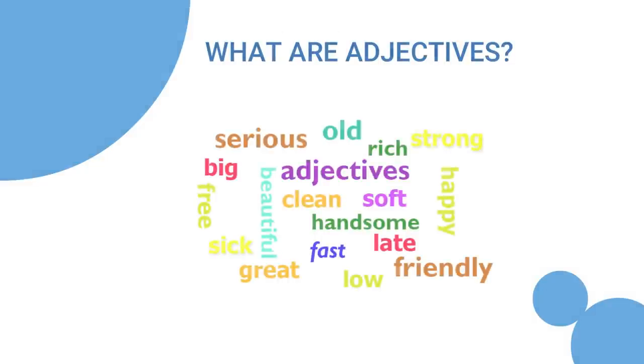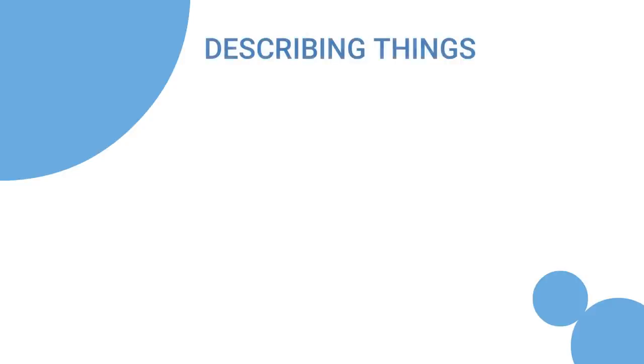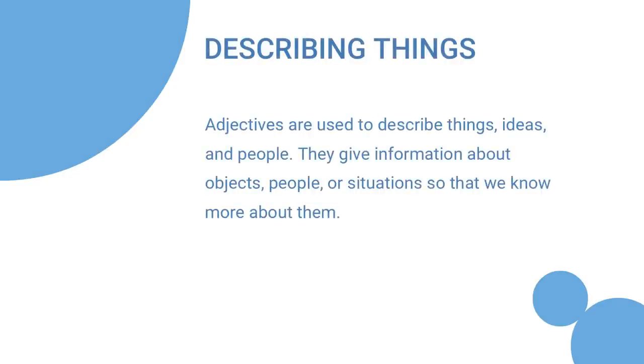What are adjectives? Describing things. Adjectives are used to describe things, ideas, and people. They give information about objects, people, or situations so that we know more about them.